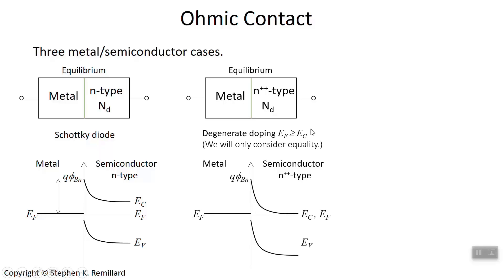Now let's increase that doping a lot, so that it is degenerately doped. Degenerate doping means you've doped the semiconductor so much that the Fermi energy crashes into a band edge — in this case the conduction band edge, because it's n-type. The semiconductor is doped such that the Fermi energy and the conduction band energy are equal in the bulk. But you still have band bending near the interface, so the bands still bend upward to maintain the Schottky barrier height. In thermal equilibrium, the Fermi energy needs to be the same all the way across, so deep in the bulk the conduction band edge comes to the exact same place as the metal's Fermi energy.